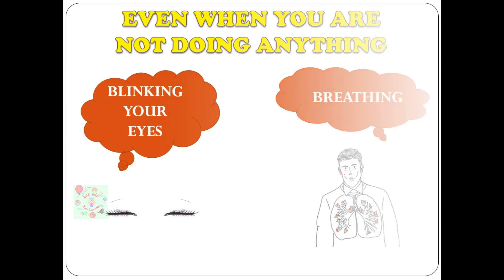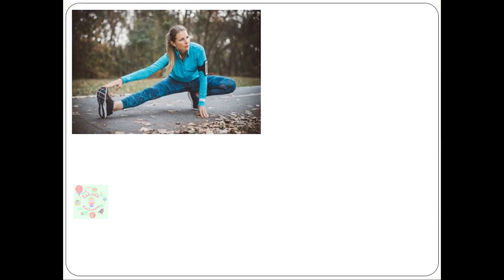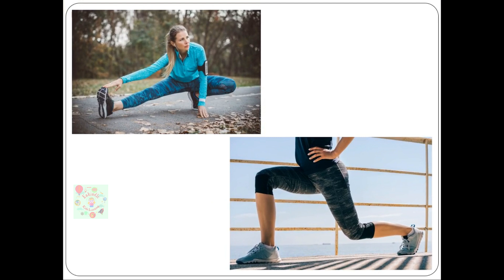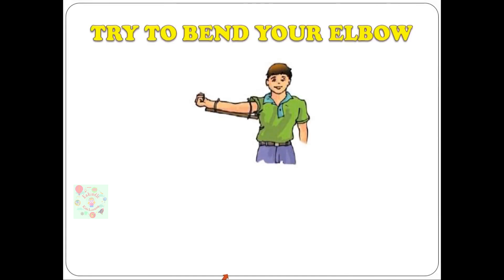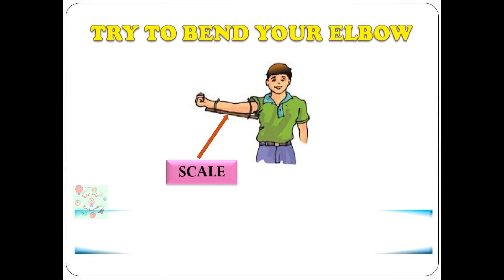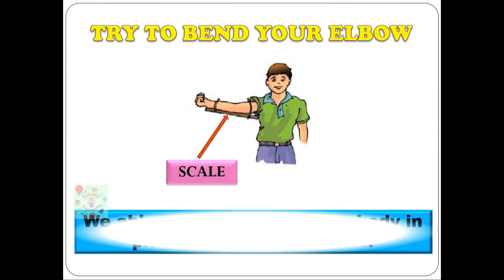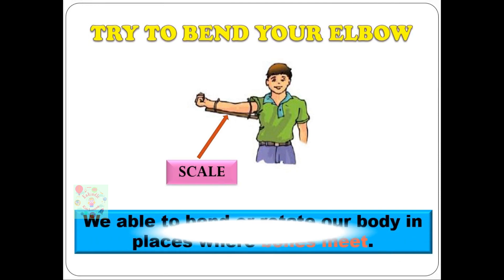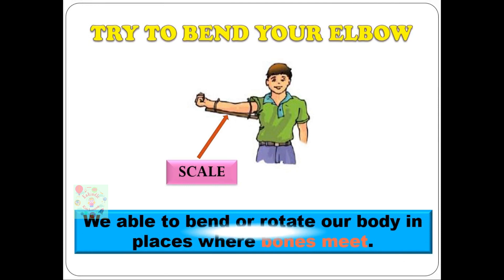When doing exercises, you can bend your arms and legs at the joints. But if I ask you to bend your hands or leg from any other point, you won't be able to. Similarly, if you tie a scale to your arm and try to bend your elbow, you won't be able to do that either.